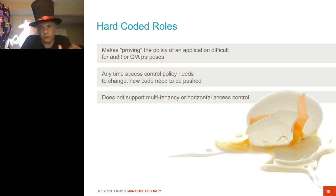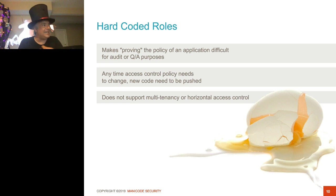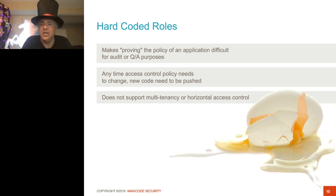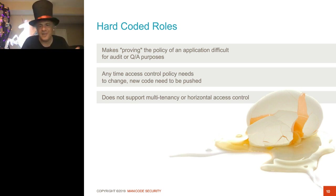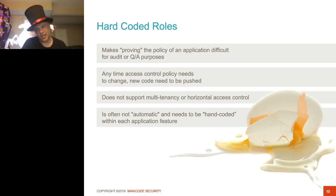Hard-coded roles also don't address horizontal access control — even something as simple as ownership, where this data is owned by me and only the owner should be able to look at that data. Role-based access control, when it's hard-coded, does not address these requirements. You end up seeing developers dealing with these in customized ways on a feature-by-feature basis. It's not automatic — you have to hand-code this as well. Every feature of your app, you have to hand-code the access control check. There's got to be a better way, and there is.